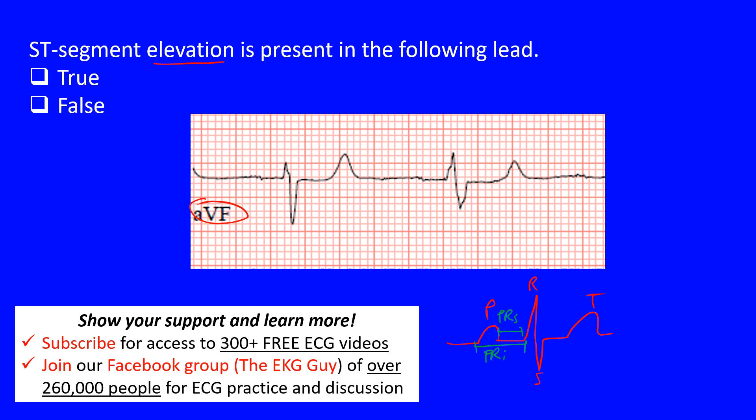The QRS interval runs from the beginning to the end of the QRS complex. The QT interval goes from the start of the QRS complex to the end of the T wave. You may have heard of QT prolongation, often measured as the QTc, where we correct for heart rate.